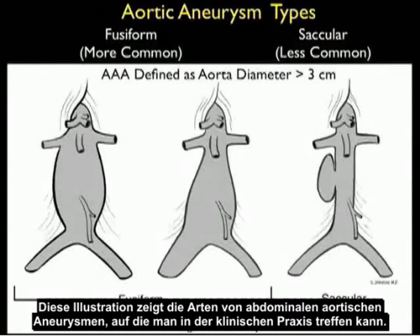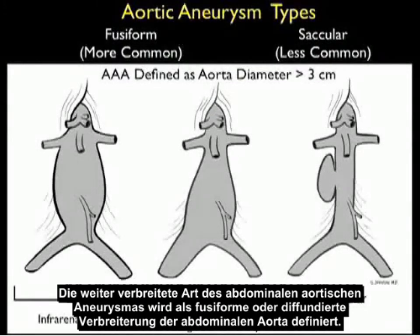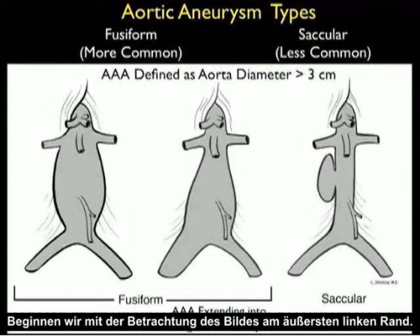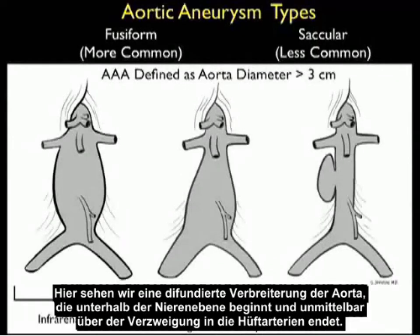This illustration shows the types of abdominal aortic aneurysms that may be encountered in clinical practice. The more common type is defined as fusiform or diffuse dilatation of the abdominal aorta. Remember that a AAA is defined as an aortic diameter greater than three centimeters. Looking at the picture towards the far left, we see a diffuse dilatation of the aorta beginning at the level below the renals and ending just above bifurcation into the iliac arteries.